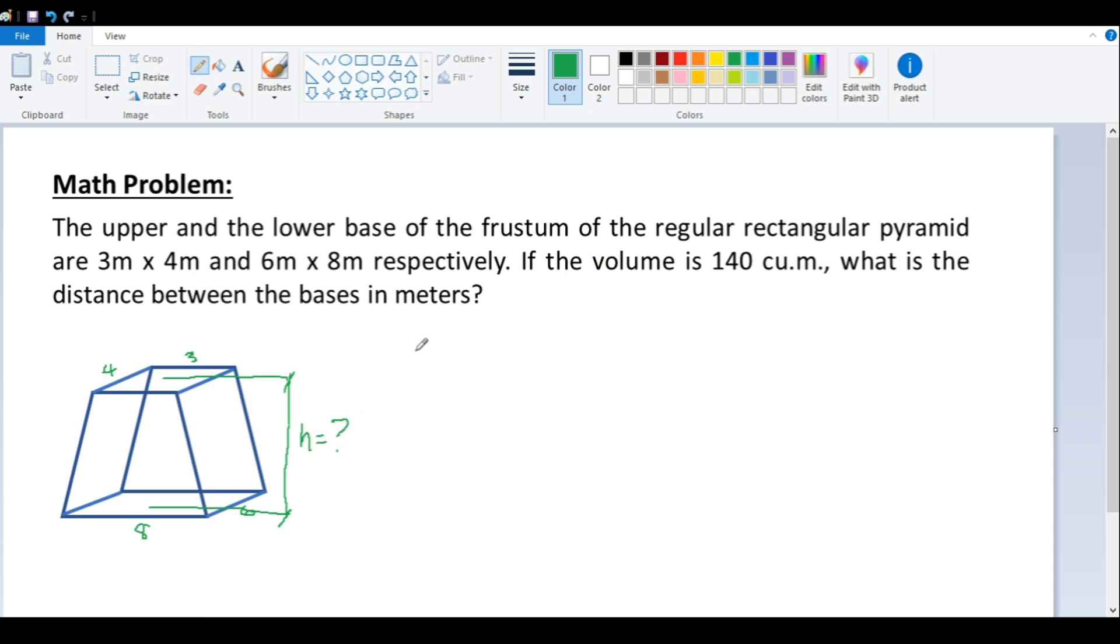The volume of any rectangular frustum of a regular pyramid is equal to h over 3 multiplied by area 1 plus area 2 plus the square root of area 1 times area 2.